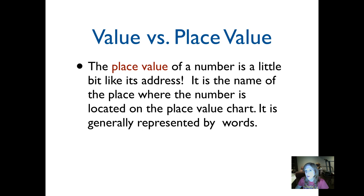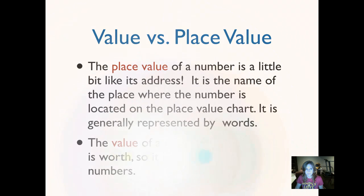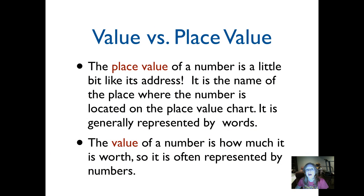We generally represent place value using words like ones, tens, hundreds, thousands. The value of a number is how much it's worth — this is pretty specific. If there's a seven in the thousands place, it's going to be worth 7,000. That's specific — not just a thousand. So it's very specific. We usually represent this by numbers; we can write it in words, but we're usually going to see it using digits.